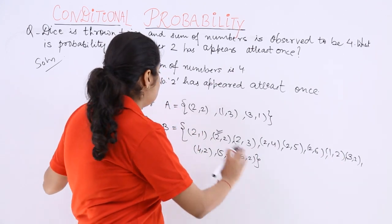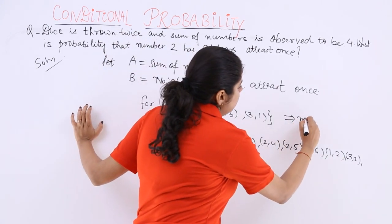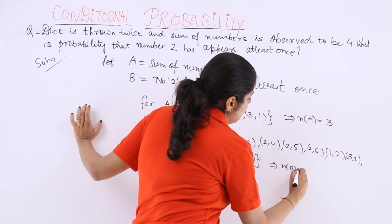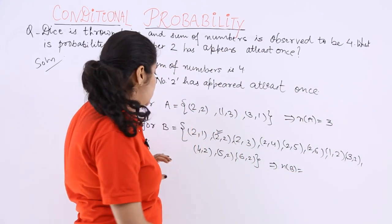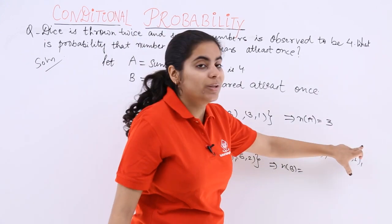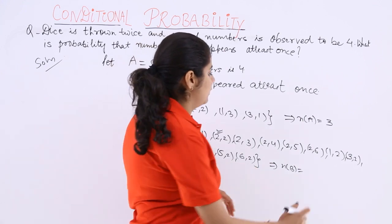Now how many cases are there here? The number of cases in A are three. How many cases are there here? The number of cases in B are 1, 2, 3, 4, 5, 6, 7, 8, 9, 10, 11.